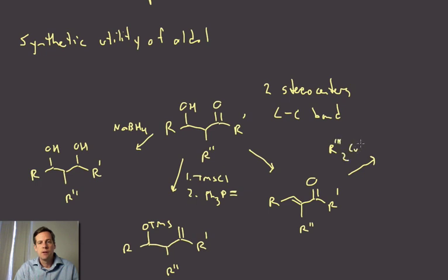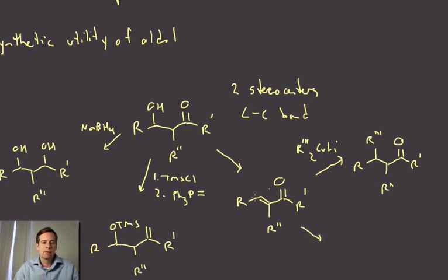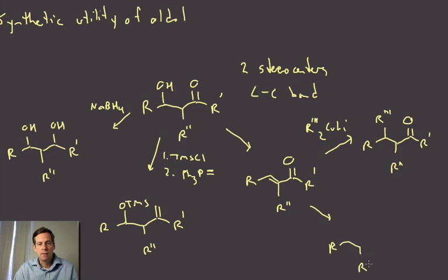So we could do that conjugate addition. Okay. All right. So now we've got this whole complexity built up. Or we could just do something like, just, let's just hydrogenate that alkene and we get to this saturated ketone. Okay.